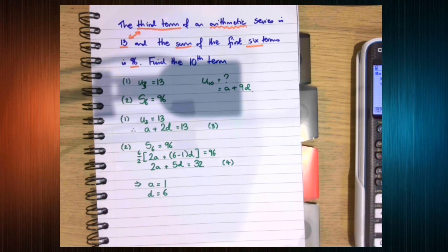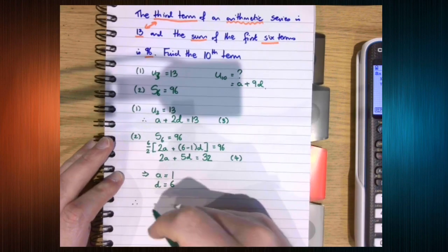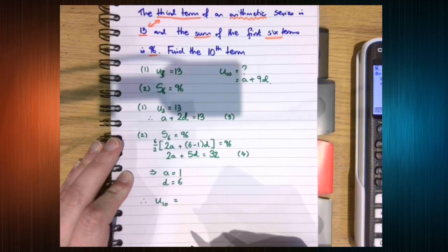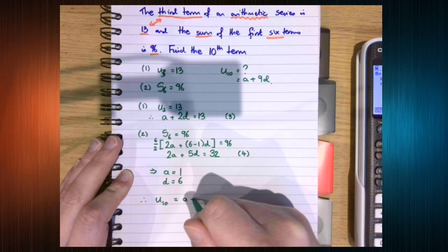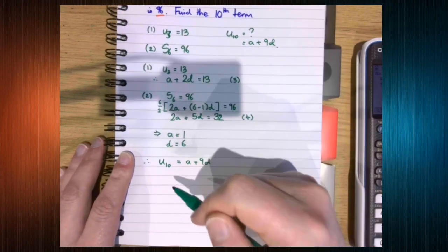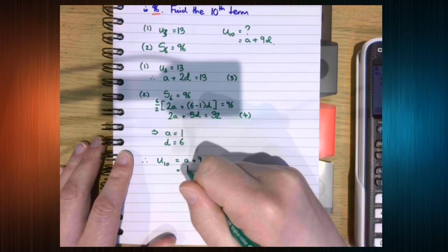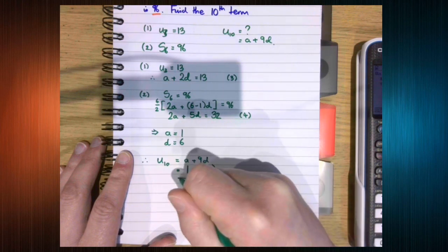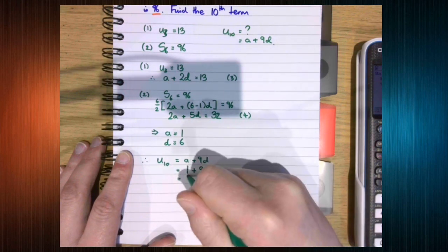Okay. So we now know that u10, the thing we're trying to find, the tenth term, is a plus 9d. We wrote that at the top, but let's write it again. So 1 plus 9 times 6 is 55.